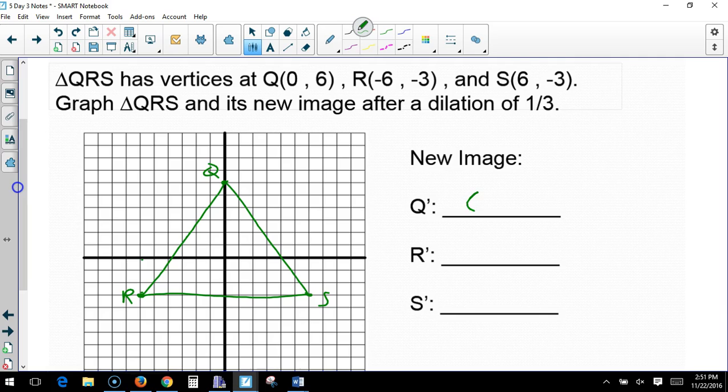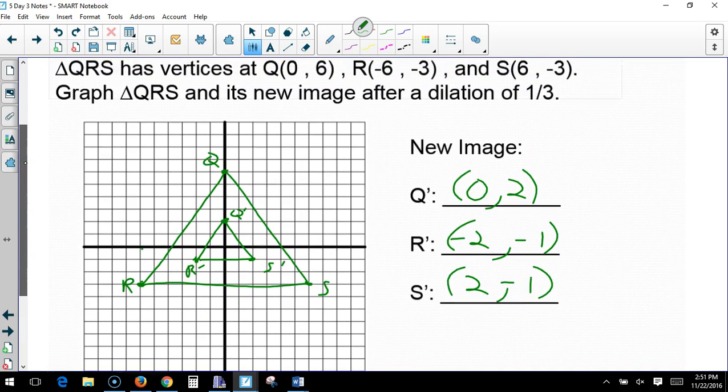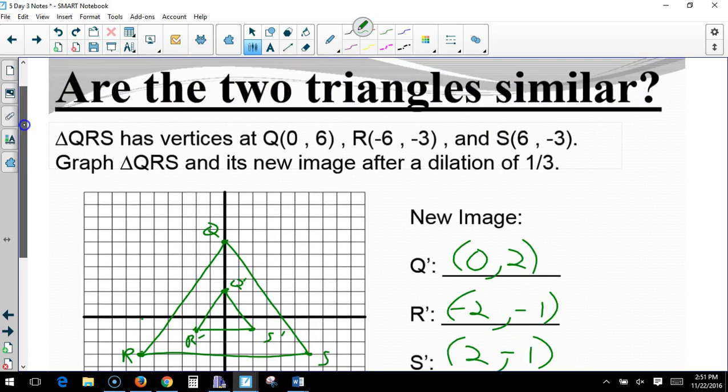0 divided by 3 is still 0. 6 divided by 3 is 2. So, 0, 2 is right here. That's my Q prime. Negative 6 divided by 3, or times 1 third, is negative 2. Negative 3 divided by 3, negative 1. So, negative 2, negative 1. There's my R prime. At S prime, 6 divided by 3 is 2. Negative 3 divided by 3, again, is negative 1. So, 2, negative 1 is my S prime. After, since I changed each point with the same dilation, yes, they are similar.